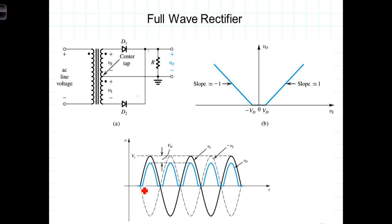So in this process, D1 brings the positive voltage to the load during this part of the cycle, and D2, when the polarity on the secondary is reversed so that this terminal here is positive relative to this terminal,